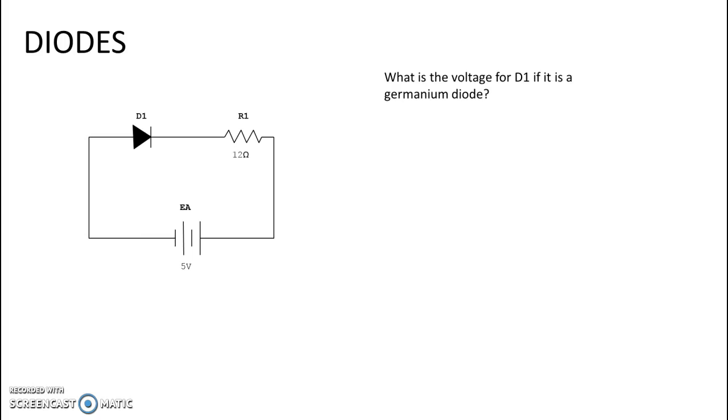So what is the voltage for D1 if it is a germanium diode? Well, it's acting like an open, so it really doesn't matter what kind of diode it is in this scenario because it has applied voltage. We see applied voltage across our open, and so that would be 5 volts. In this case, because it is reverse biased, the voltage on D1 would be 5 volts.